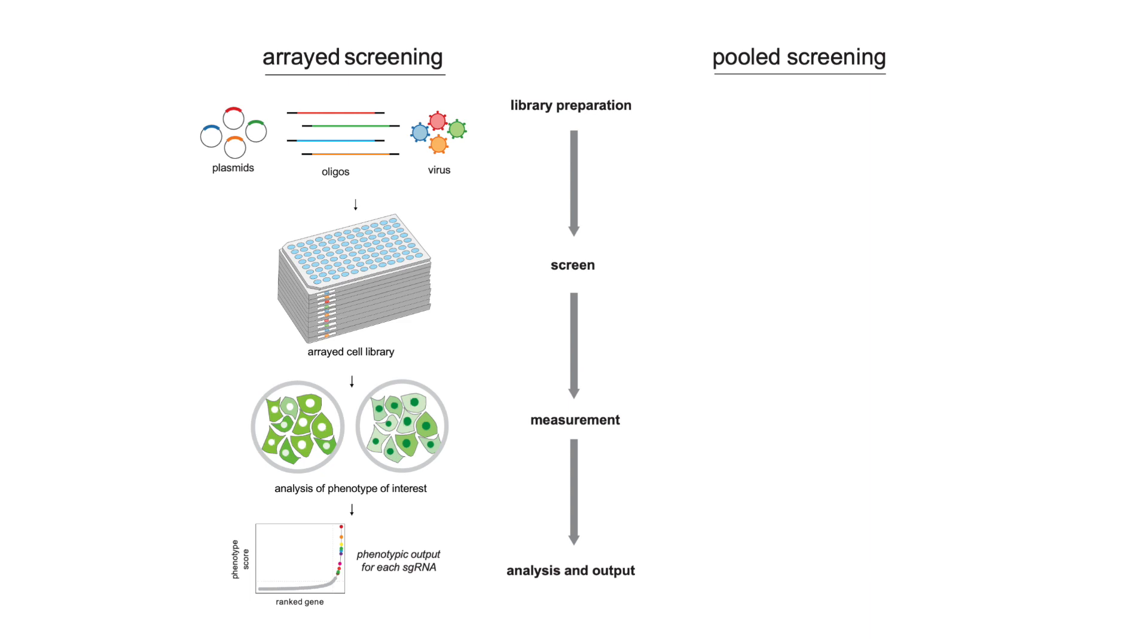A major advantage of image-based screens is that there are a wide variety of phenotypic assays that can be used to probe different biological pathways and cell states. However, arrayed genetic screens can be challenging to scale up because of the difficulties associated with generating and maintaining a large arrayed cell library.